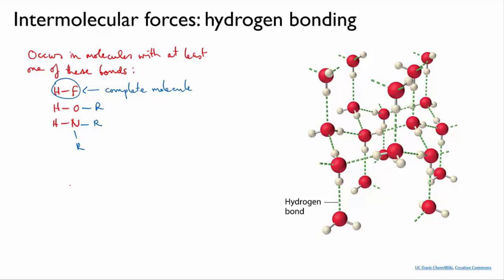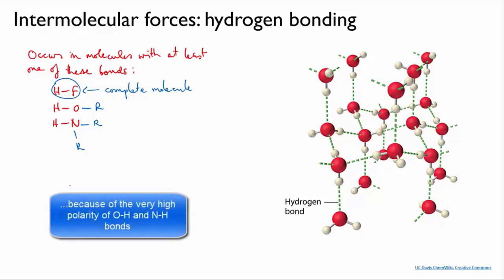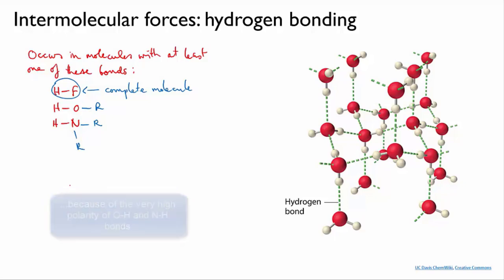So hydrogen bonds are rather like dipole-dipole attractions, in that they arise from a permanent dipole in the molecule, with positive and negative ends. But they are significantly stronger than dipole-dipole attractions, and also more directional. That is, they occur between specific atoms rather than over the molecule as a whole.